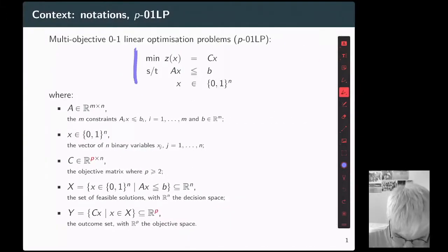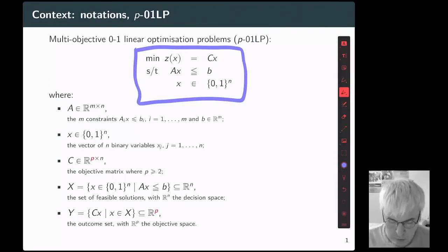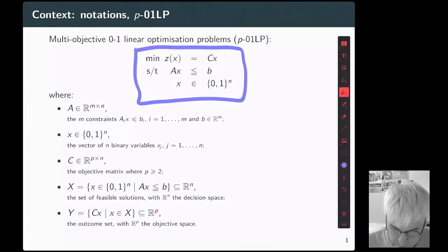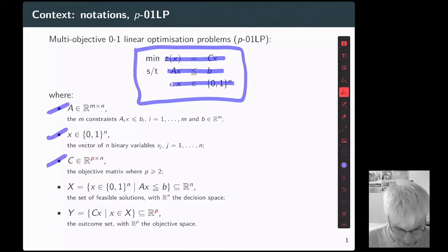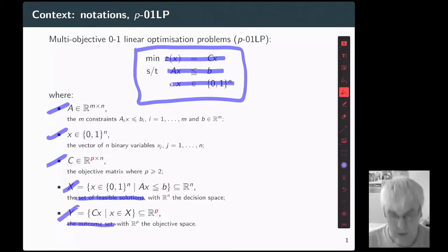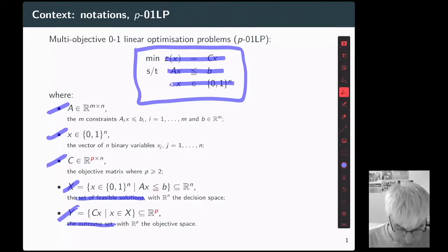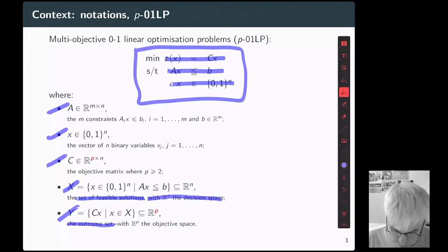The problem considered in this talk is formulated as follows. We consider a multi-objective binary linear optimization problem where we have P linear objective functions, a matrix of linear constraints, and the variables are binary. We denote by capital X the set of feasible solutions and capital Y the outcome set — the image of X according to the P objectives. X belongs to the decision space and Y belongs to the objective space.